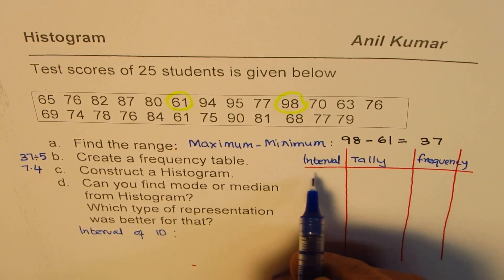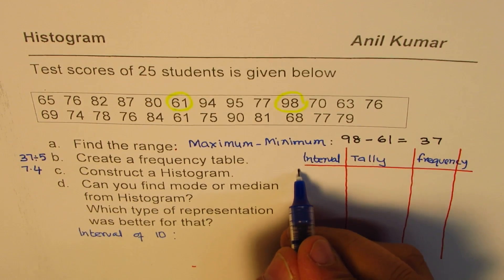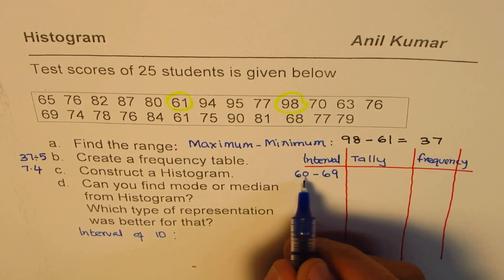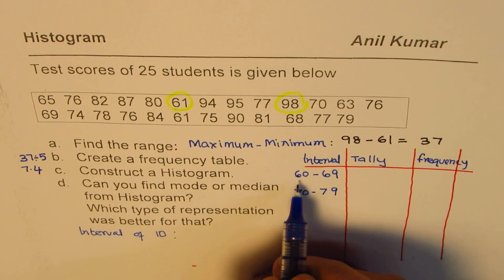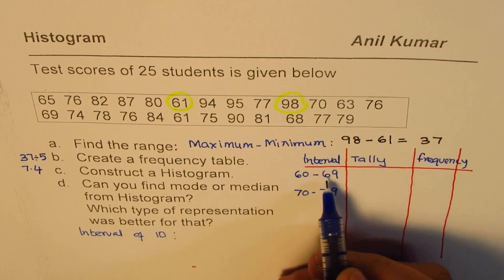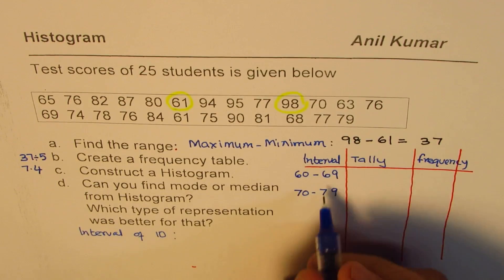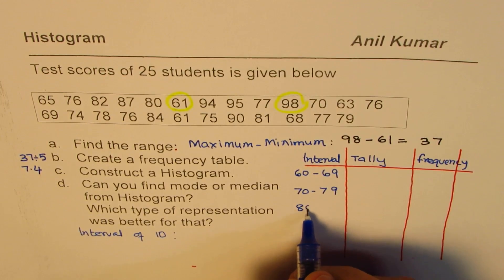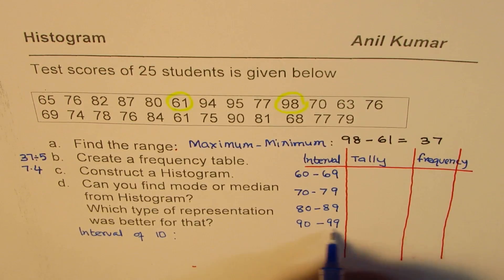With an interval of 10, looking at the marks, our intervals are: 60 to 69, 70 to 79, 80 to 89, and 90 to 99. We start at 60 because the minimum is 61, so all numbers will be included. We end at 100 since 98 is the highest mark. This gives us four intervals.